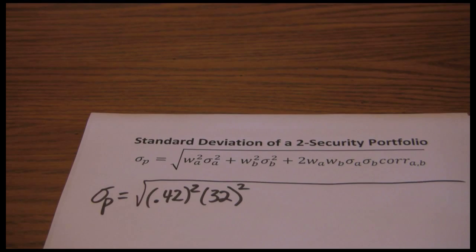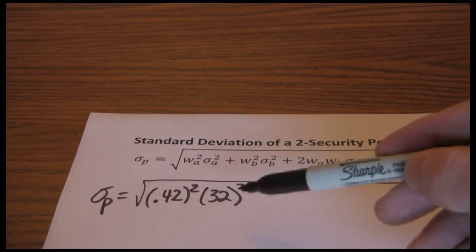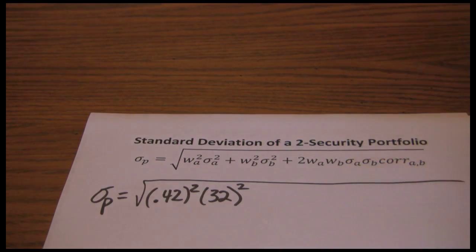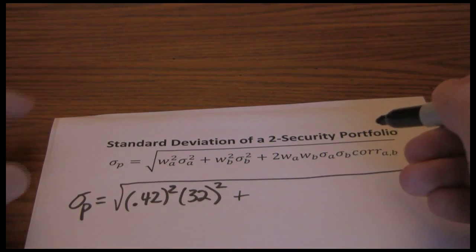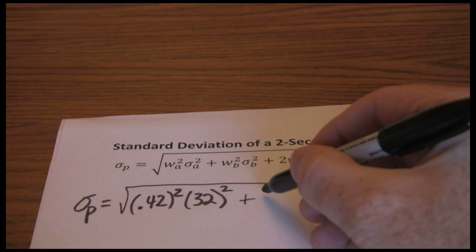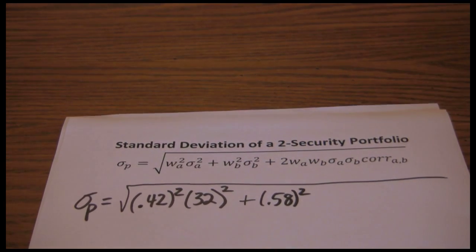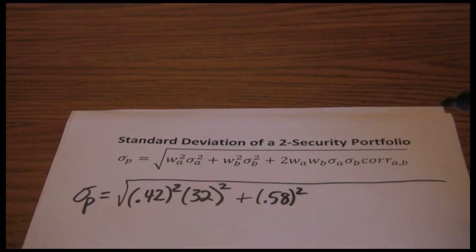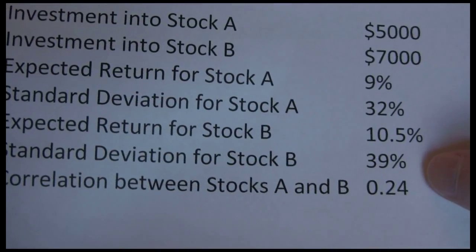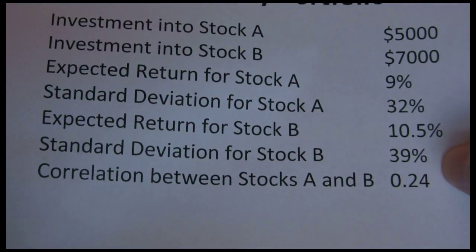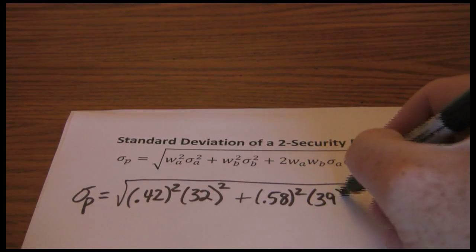So .42 squared times 32 squared. Now I go on to b. Weight in b squared we said is 7,000 divided by 12,000 or .58 squared. And the standard deviation for stock b is 39%. So 39 squared.